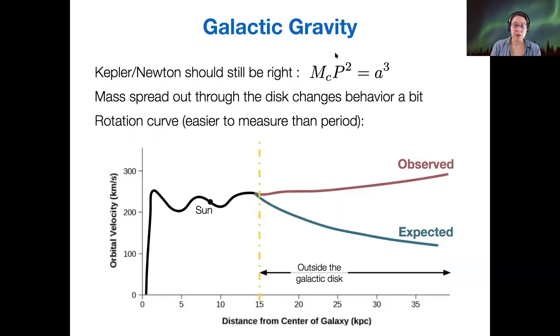So the rotation curve that we actually observe is just what you just noticed. Things that are far from the center are faster than we expect them to be. And so this rotation curve does not look like the rotation curve for our solar system anymore. So what gives?